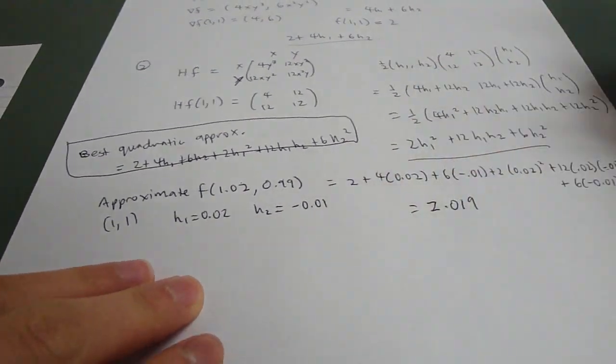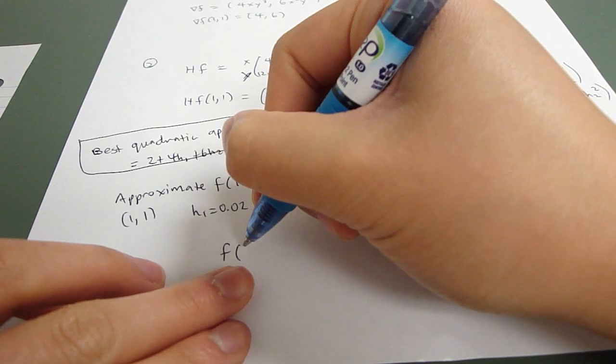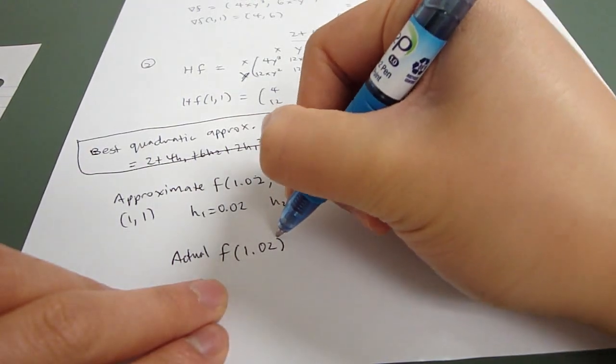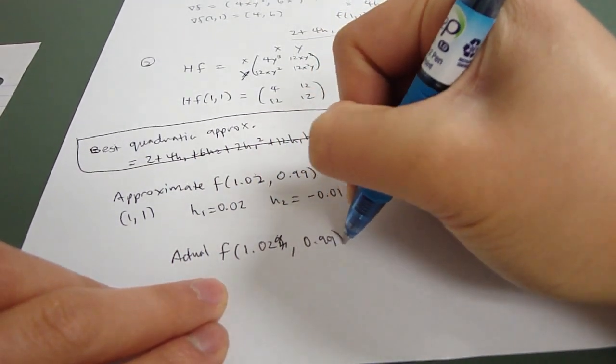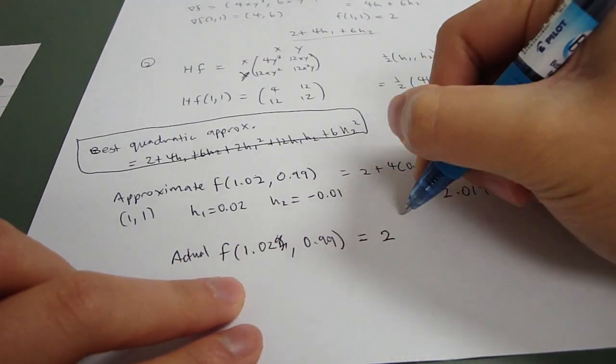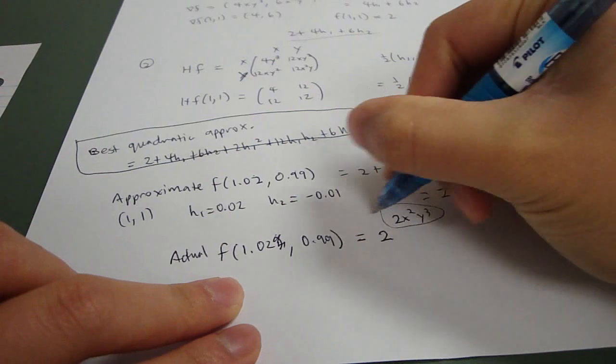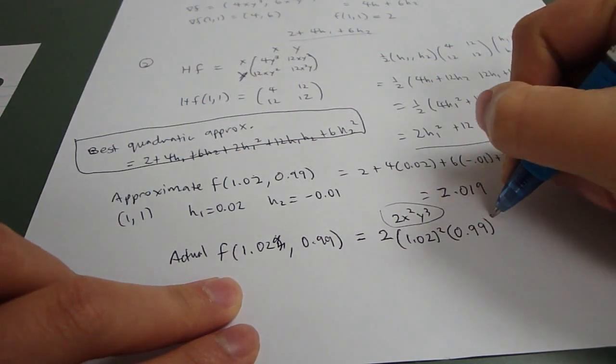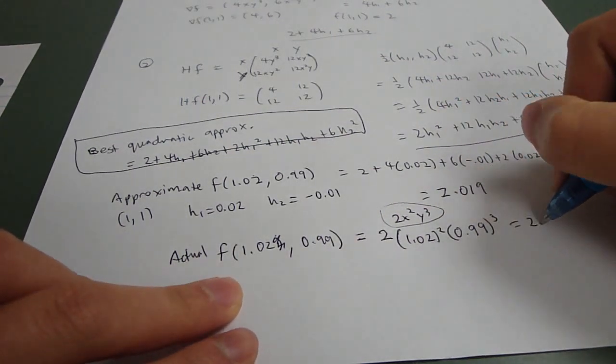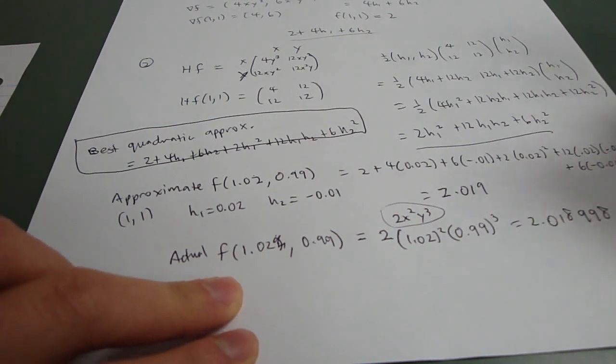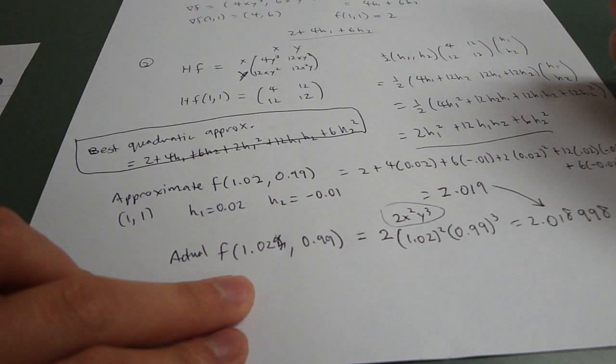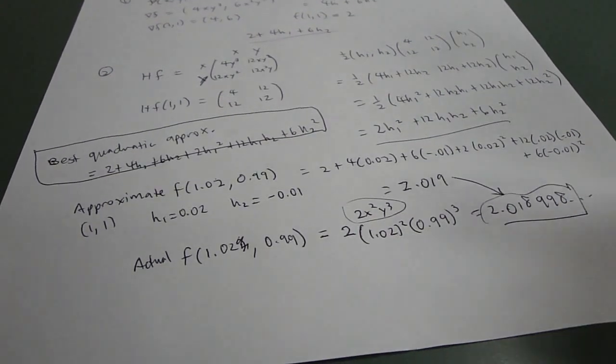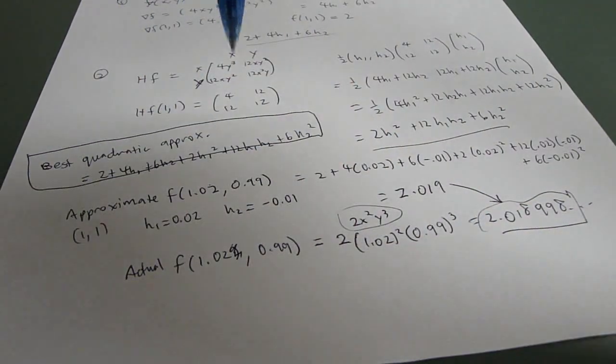So, if you wanted to check that, the actual, you plug these points in, you would get, this is the original equation. So, you just plug that in. You get 2.018998. And so, our approximation is almost exactly the same as our actual number. So, that means your best quadratic approximation equation is correct.